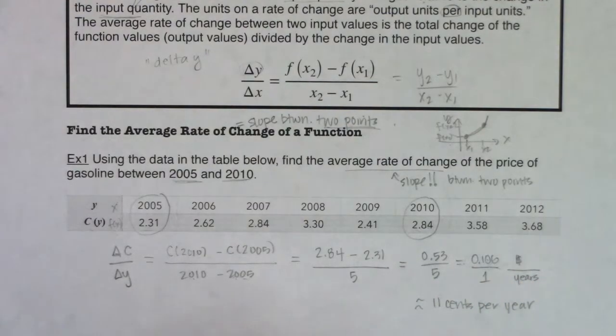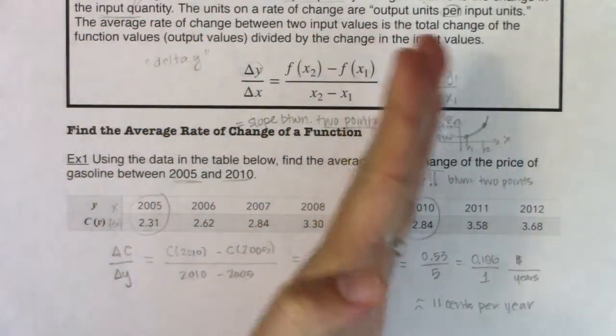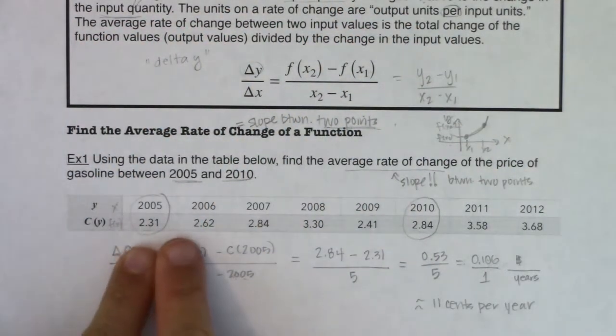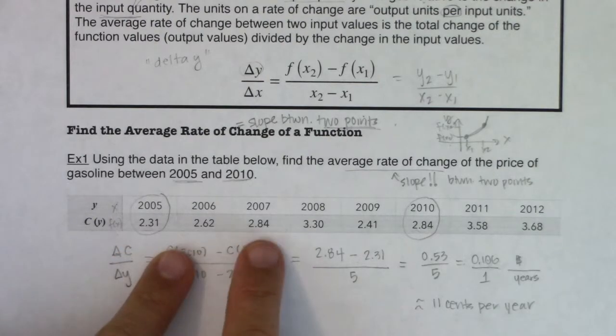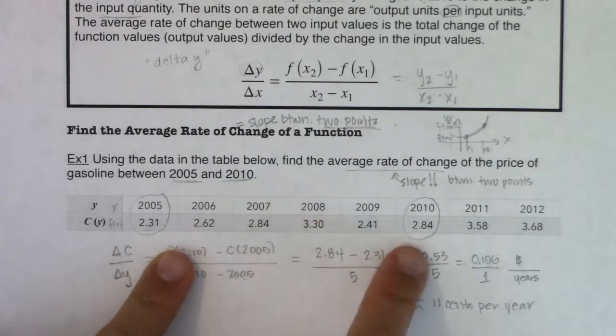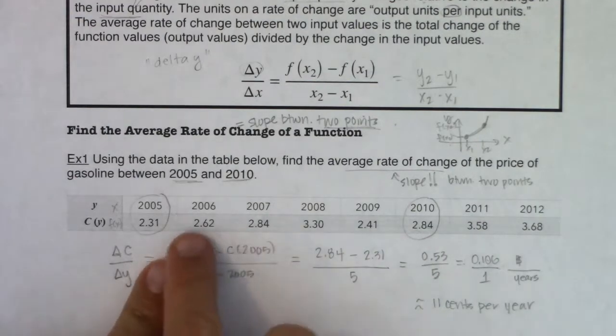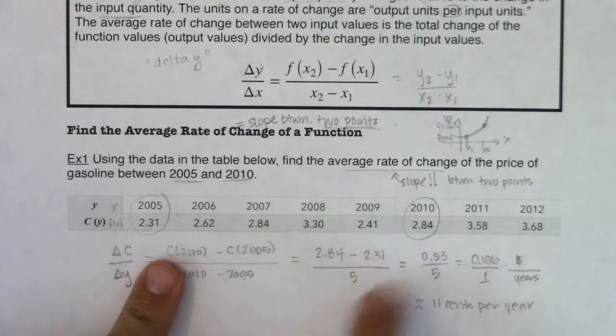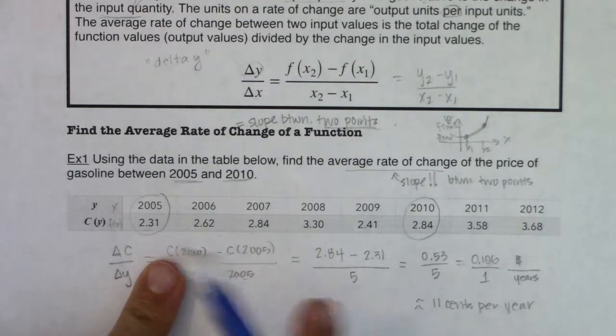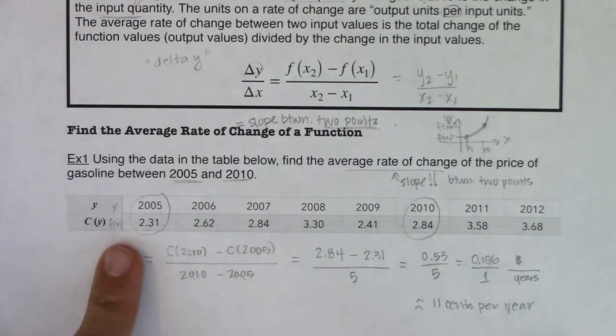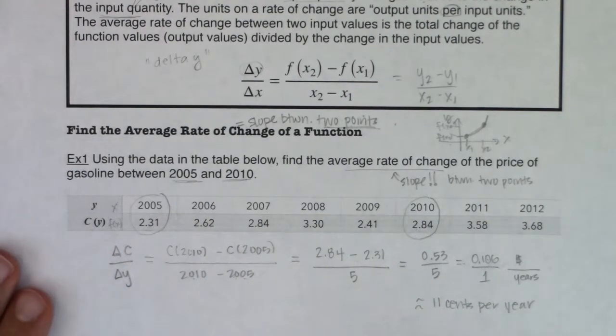So it went up an average of about 11 cents per year. This isn't saying that gas went up exactly 11 cents every single year, and you can see that wasn't the case. This was an increase of 32 cents, then about 22 cents. Then it took a big leap. Then it took a big dive. So it was heading up and down. It was fluctuating between those years. But on average, it increased about 11 cents per year.